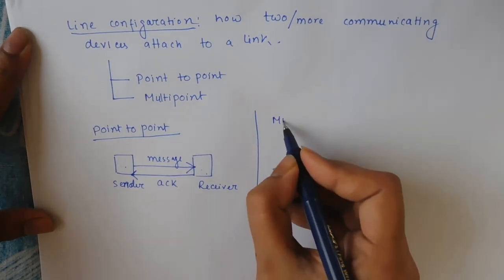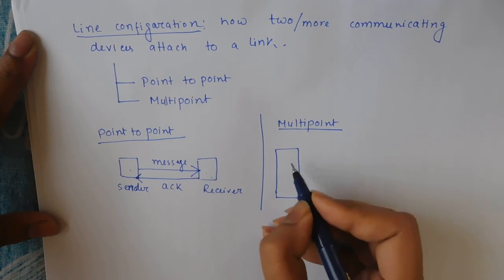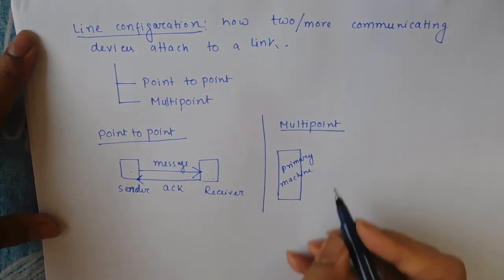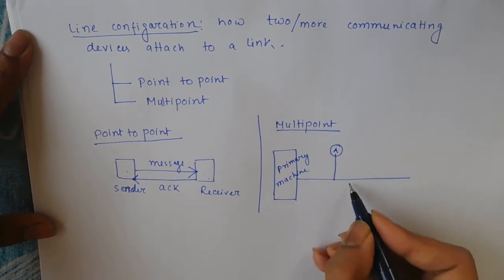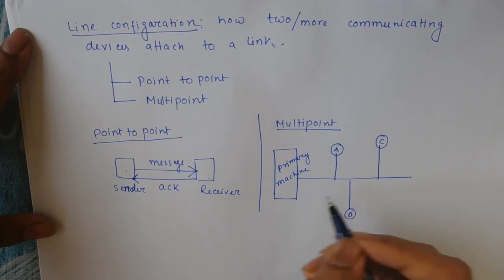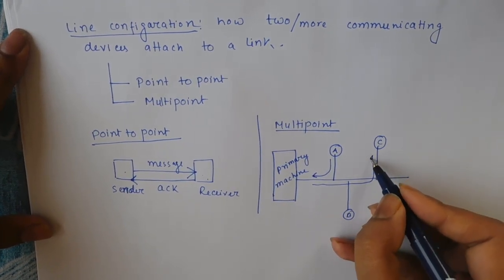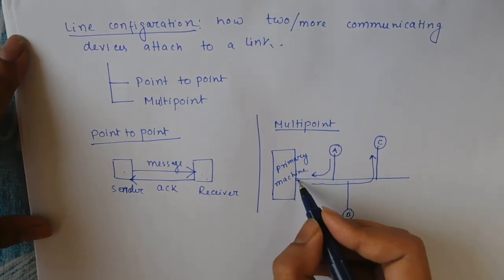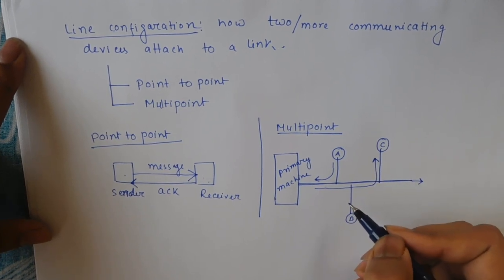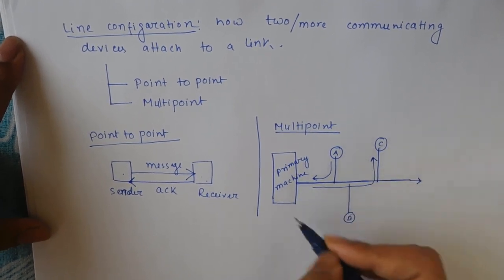For multipoint configuration, there is a primary machine. All the nodes — suppose A, B, C — are connected to the primary machine. If A wants to send data to C, it is first sent to the primary machine, then from the primary machine it is sent to receiver C. In multipoint there is a shared link; all data communicates through the primary machine. If any of the nodes is damaged, the whole network is faulted.